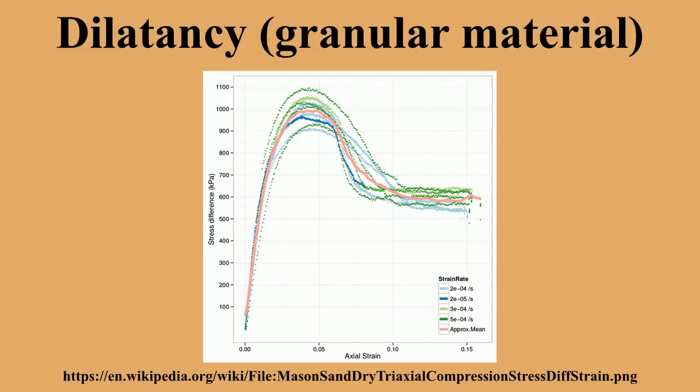Dilatancy is the volume change observed in granular materials when they are subjected to shear deformations. This effect was first described scientifically by Osborne Reynolds in 1885-1886 and is also known as Reynolds dilatancy. Unlike most other solid materials, the tendency of a compacted granular material is to dilate as it is sheared.